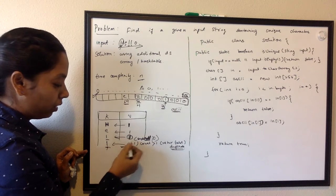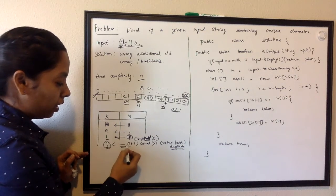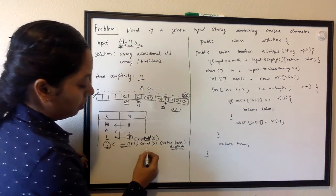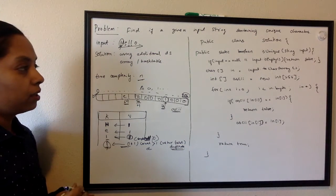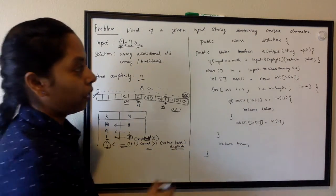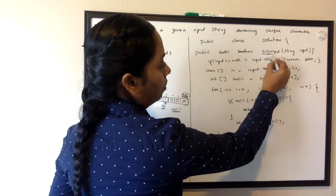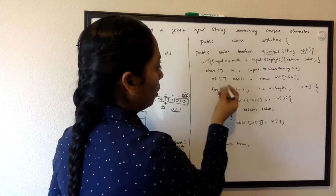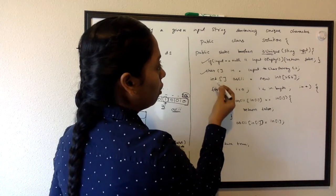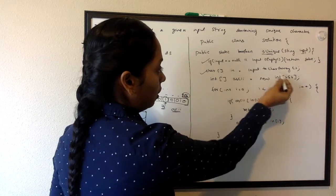If it is containing one when you're trying to input the second time, if the value is already one for that particular key, then straightaway say that this string contains a duplicate character. So let's jump on to the code. I have written a method called isUniqueCharacter taking input string.